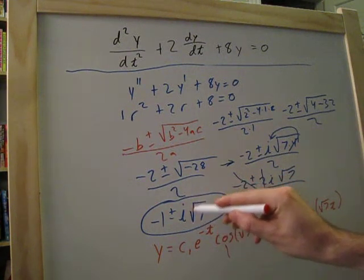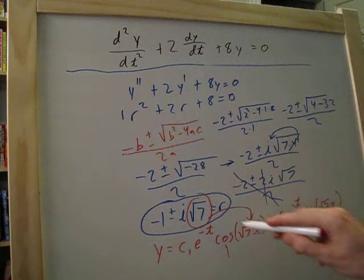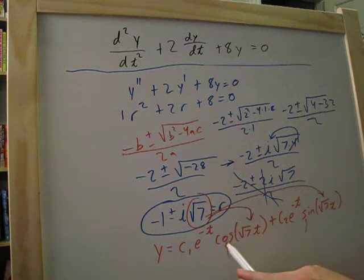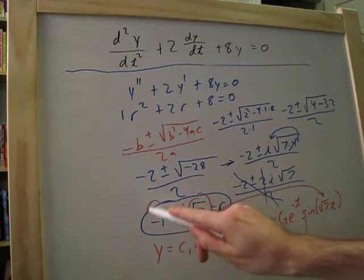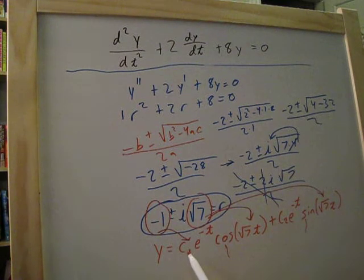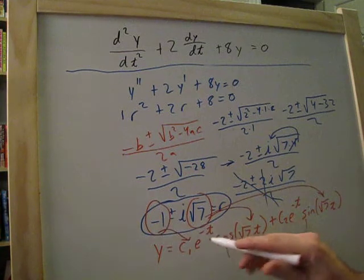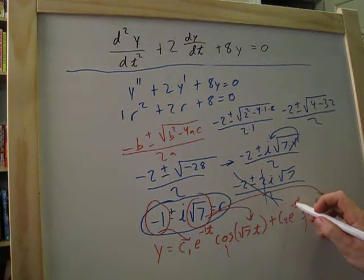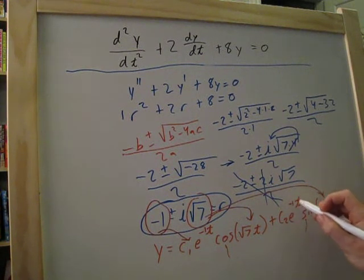And then this piece right here will always end up going in here. Okay, so this i7 will end up being cosine square root of 7 times the variable. And then this part out here will be the reason why we have this section right here. So, it will be c1e to the negative t. Well, this right here you can count as e to the negative 1t. And we can bring that over again. So, it's c2 times e to the negative 1t over here as well.